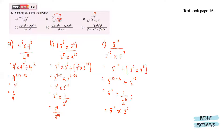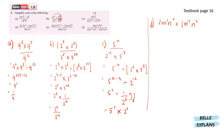Since we flip this number over, it will become a multiplication. We have 3 to the power of 10 minus 8, giving us 3 to the power of 2, and n to the power of 6 over 9, with m to the power of 3 and m to the power of 5.